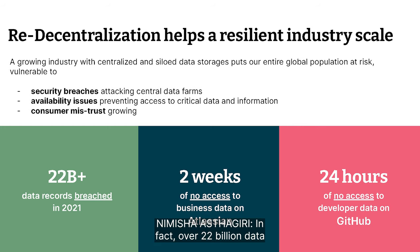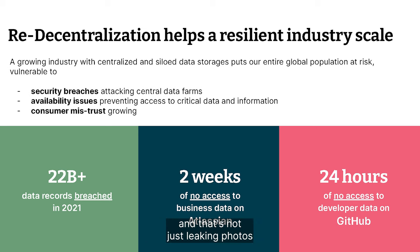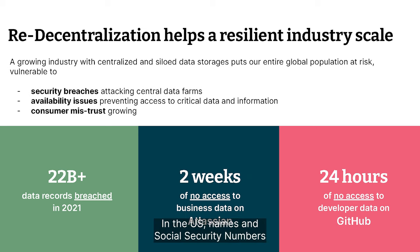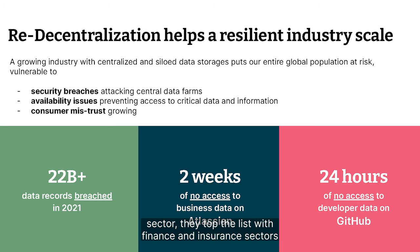Over 22 billion data records were breached in 2021 alone — and that's not just leaking photos of pets. In the U.S., names and social security numbers were the two most compromised data types, and the healthcare sector topped the list, with finance and insurance sectors closely following.